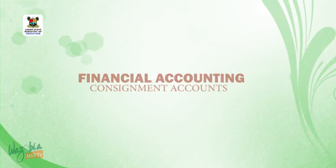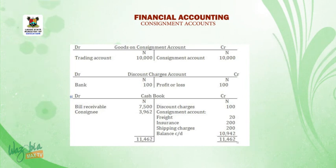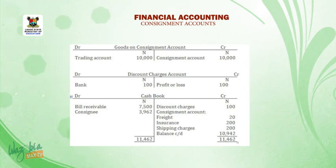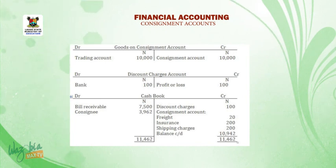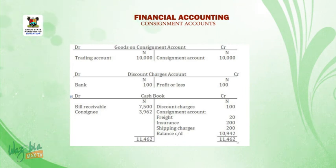Welcome back. Goods on consignment account: debit side — trading account 10,000 Naira; credit side — consignment account 10,000 Naira. Discount charges account: debit side — bank 100 Naira; credit side — profit or loss 100 Naira. Cash book: debit side — bills receivable 7,500 Naira; consignee balance 3,962 Naira. Credit side — discount charges 100 Naira; consignment account freight 20 Naira; insurance 200 Naira; shipping charges 200 Naira; balance carried down 10,942 Naira. Total of 11,462 Naira on both sides.